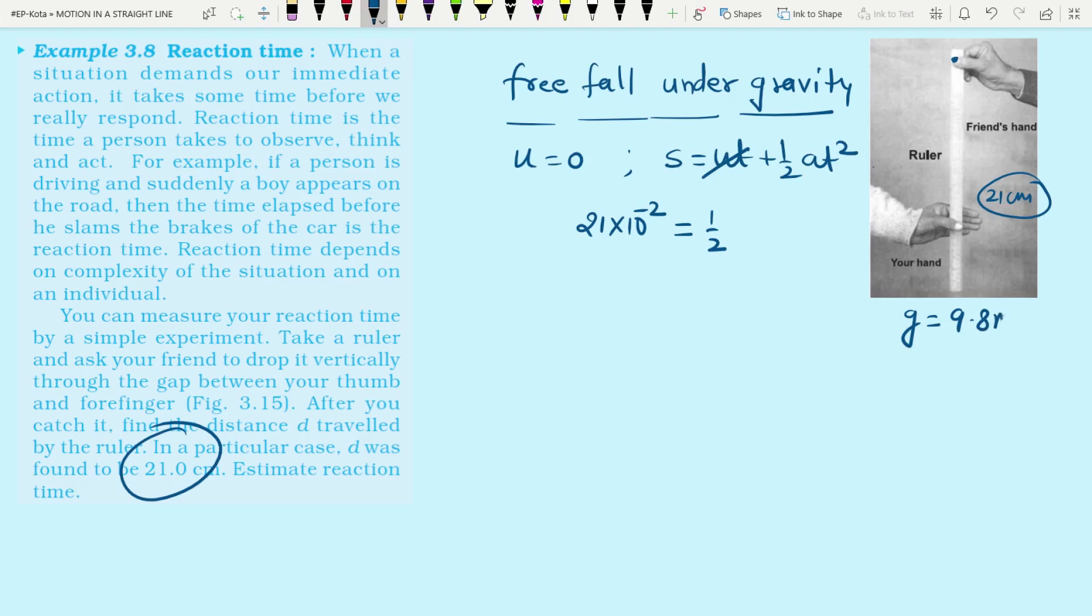For free fall, a is due to gravity. The g value is 9.8 meters per second squared, so that is 9.8 into t squared. Finally, we have t squared equal to 21 into 2 into 10 to power minus 2 divided by 9.8, which equals 10 to power minus 1.